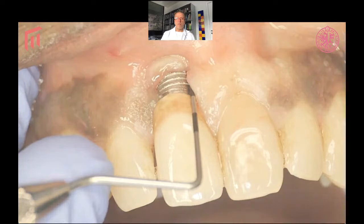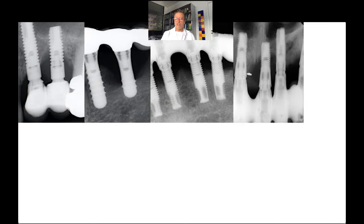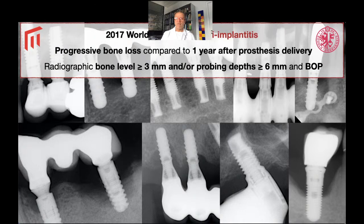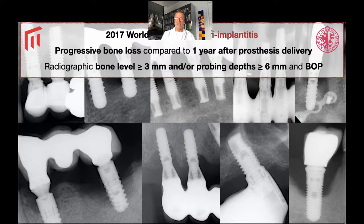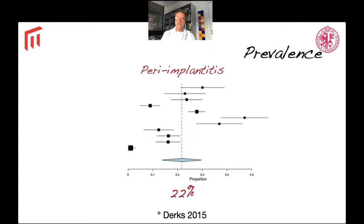Peri-implantitis is the condition where we have an inflammation in the peri-implant mucosal tissues and progressive bone loss comparing to one year after prosthesis delivery. Because in many cases we do not have two x-rays from baseline, the new classification of periodontal and peri-implant diseases has decided that we need at least three millimeters of bone loss and a deep pocket of at least six millimeters including inflammation to have a case of peri-implantitis. As shown in a systematic review, on average approximately one in every fifth patient with implants suffers from peri-implantitis — so it is quite a lot.